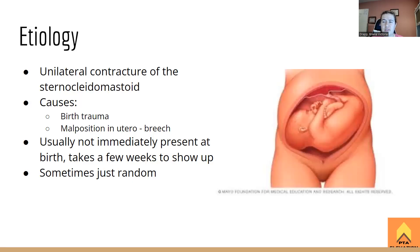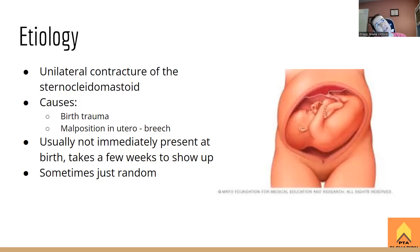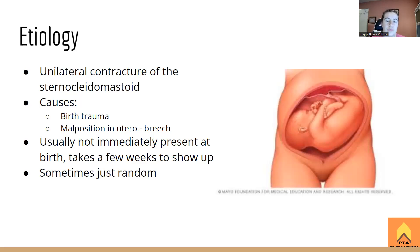Torticollis is essentially a unilateral contracture of the sternocleidomastoid. You can't really have it present bilaterally because then the head would just flex forward. Think of it like when you sleep on your pillow with your neck a little too stretched — one part of your neck gets really tight and you're kind of stuck like that. I always think of it like holding a landline phone between your ear and shoulder — that's the contracture you'll see with the SCM.